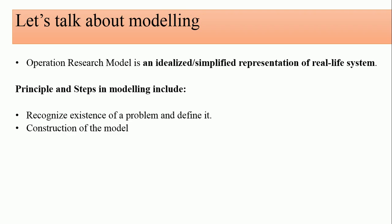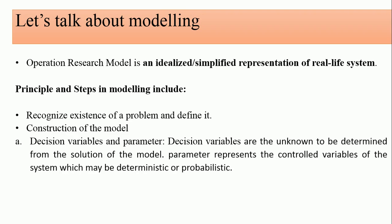In constructing the model, you need certain elements. The first is decision variables and parameters. Decision variables are those variables that determine your solution — they are determined from the solution of the model and help you make interpretation for the implementation of the solution. Parameters are the control variables of the system, which can be deterministic or probabilistic.